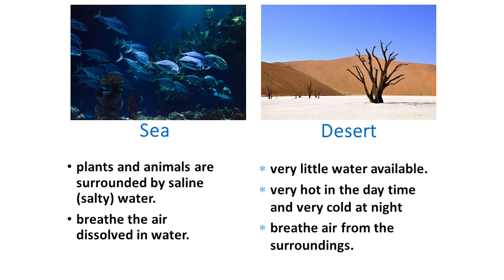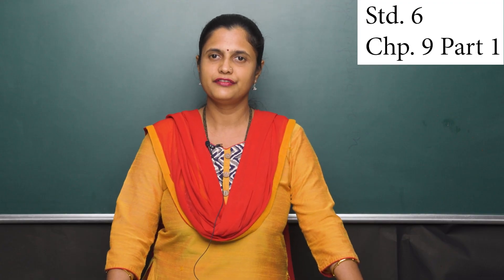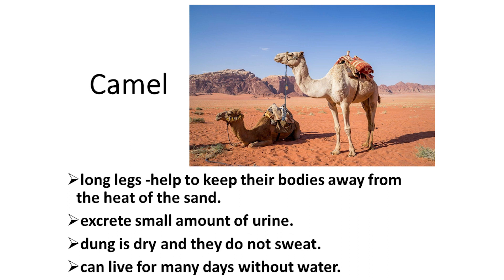Now let us understand two very different organisms from desert and sea — that is, camel and fish. First, let us understand why a camel is able to survive in a desert. The body structure of the camel enables it to live in a desert. Camels have long legs which help them to escape from the intense heat of the sand. They excrete very little urine, their dung is also dry, and they sweat very less. Since camels lose very little water from their bodies, they can survive for many days without water.